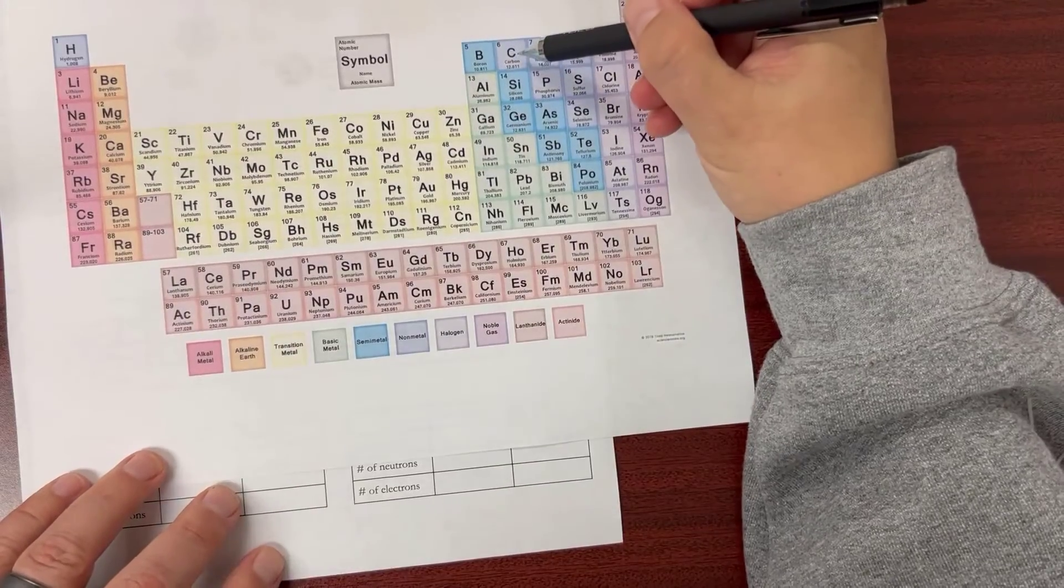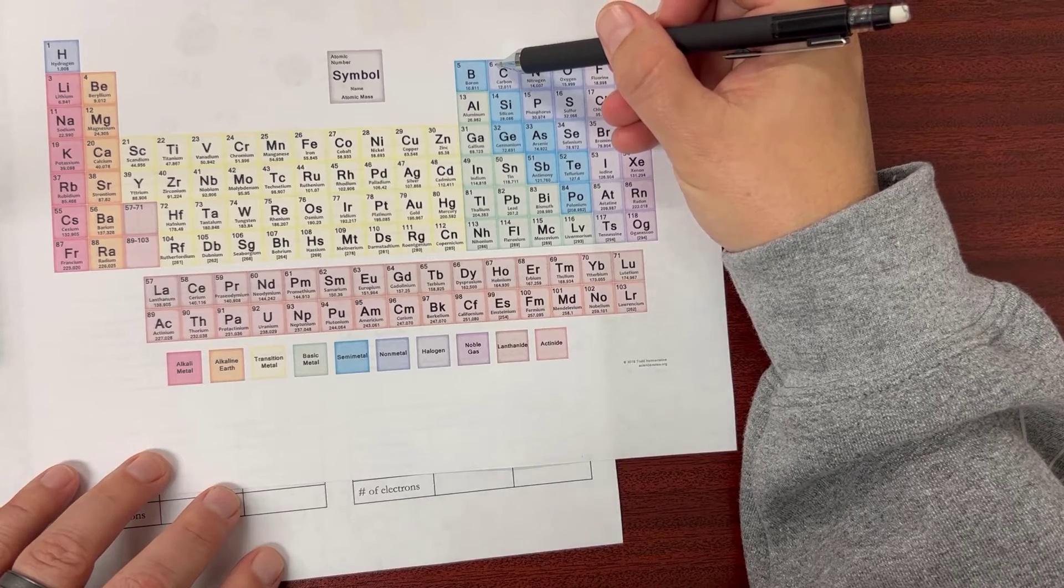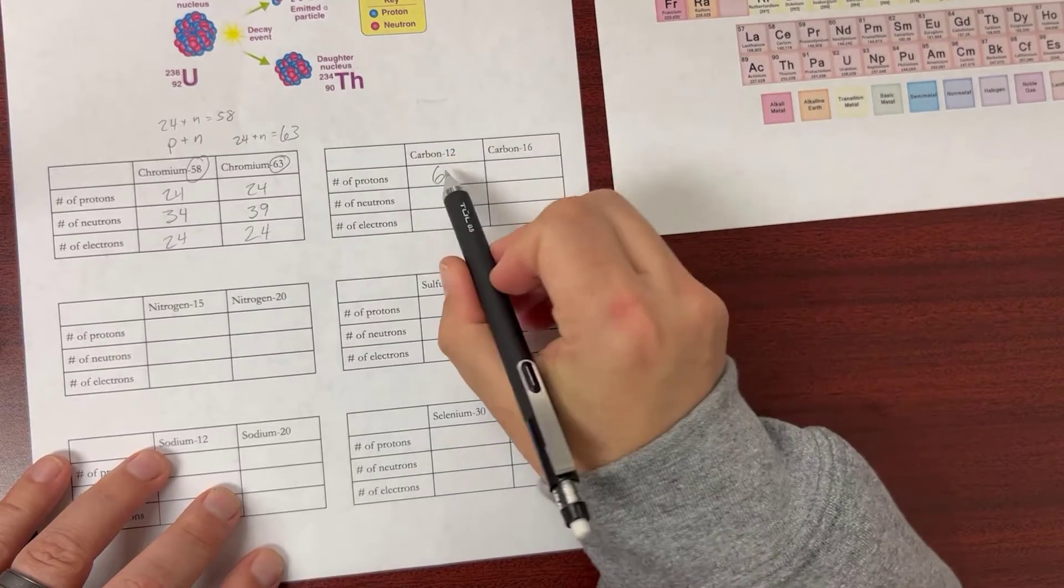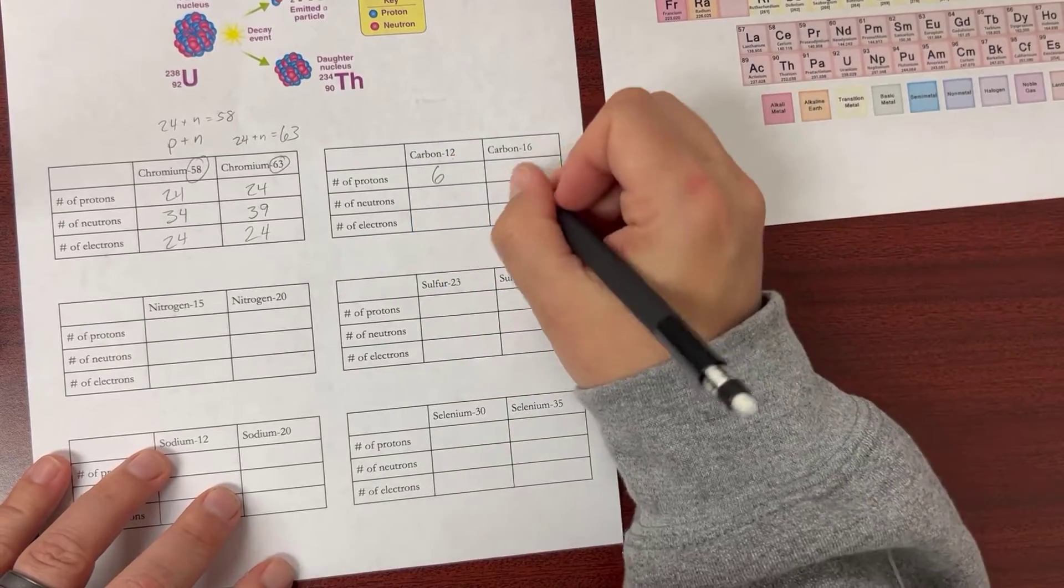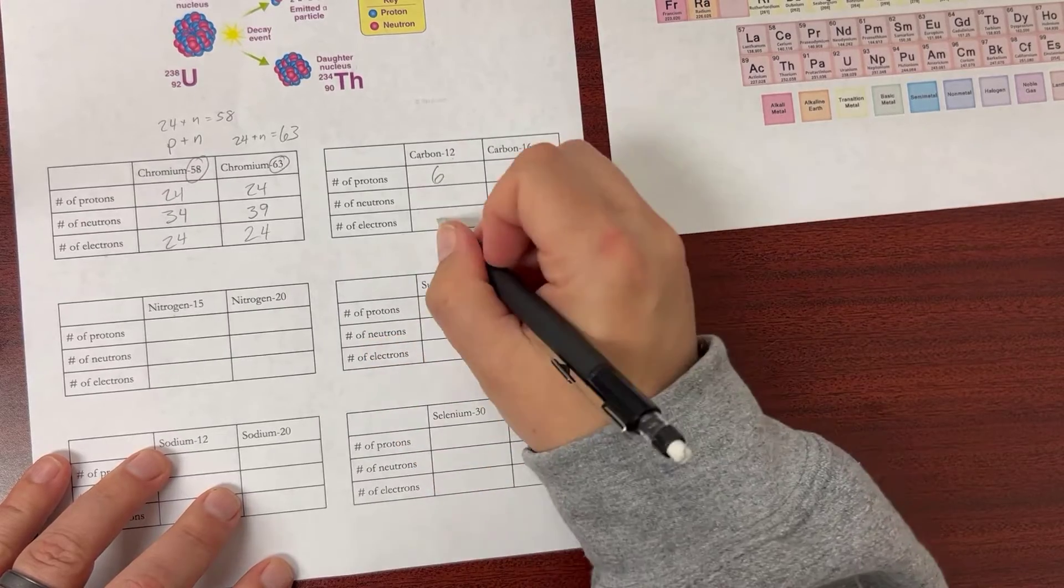I find carbon up here on the periodic table, and it has an atomic number of six, which means there are six protons. Carbon-12 and carbon-16 always have six protons because it's carbon. Electrons match the protons.